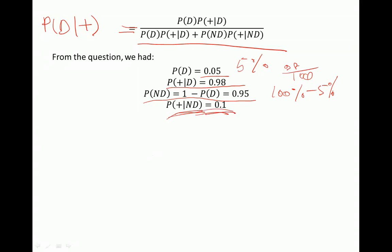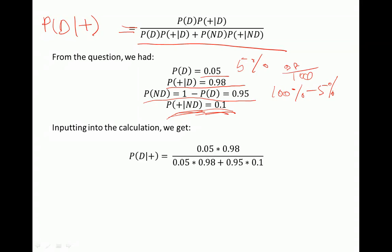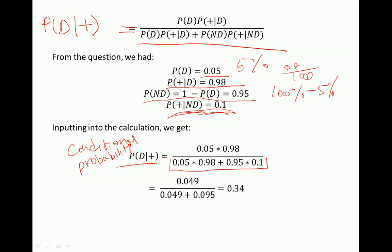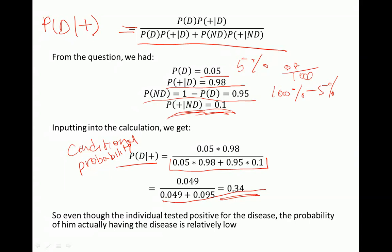We use these numbers to substitute into our formula to compute the conditional probability of disease given a positive test result. Putting the numbers into the calculation, the conditional probability of disease given positive test result equals approximately 0.34. So even though the individual tested positive, the probability that they actually have the disease is only 0.34 — relatively low given the positive test result.